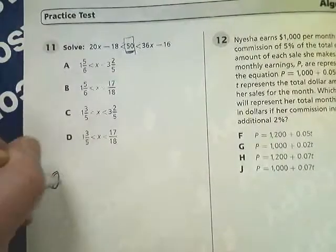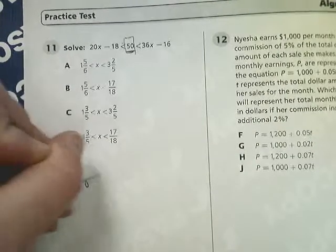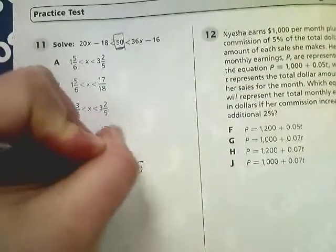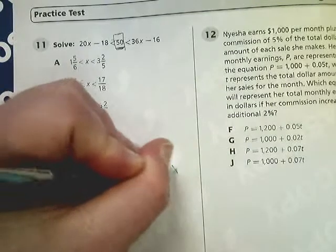So the first one is 20x minus 18 is less than 50. And the second one would be 50 is less than 36x minus 16.